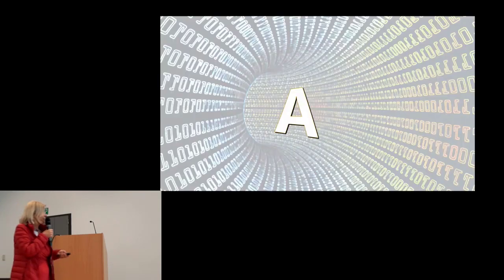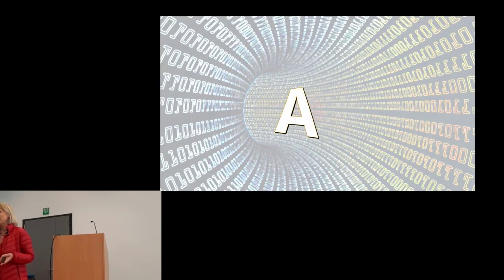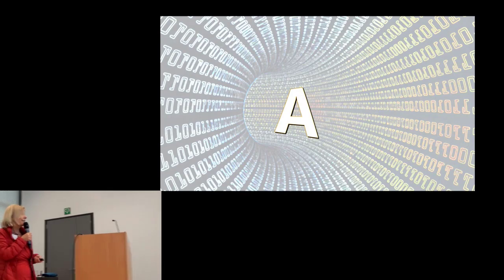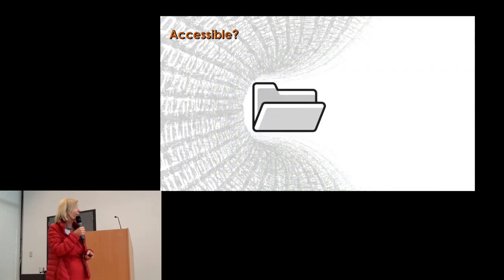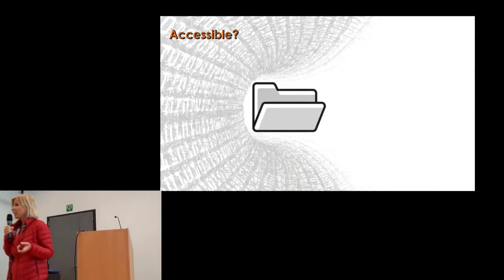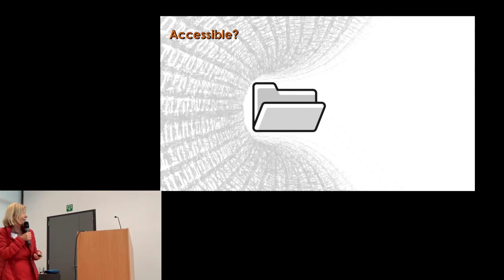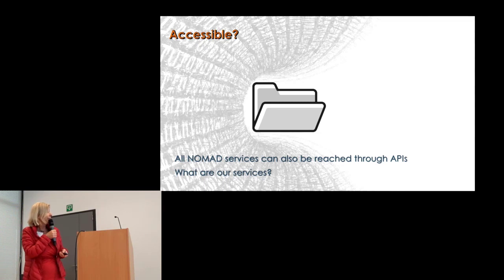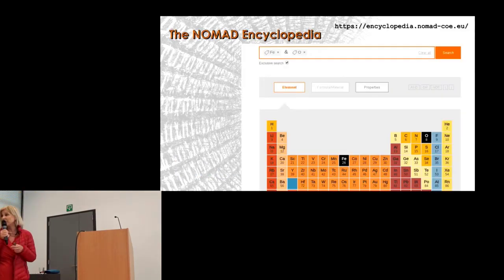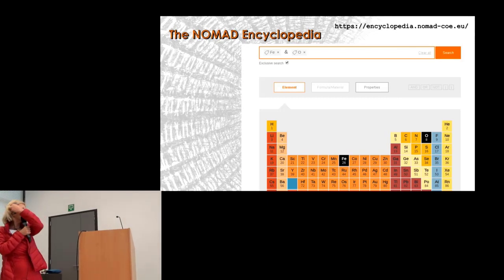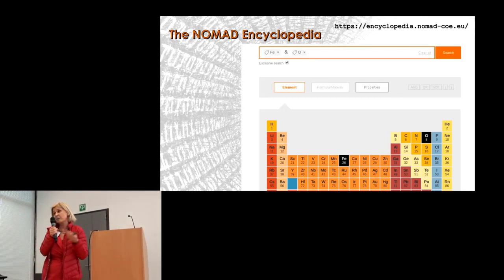You may ask whether these data are accessible. They are accessible for experts in the sense that everything is sitting in files. We collect all the full input and output files, which you can download by APIs or other services. But the question is, can we make it more human accessible? To do so, we created another service: the NOMAD encyclopedia.